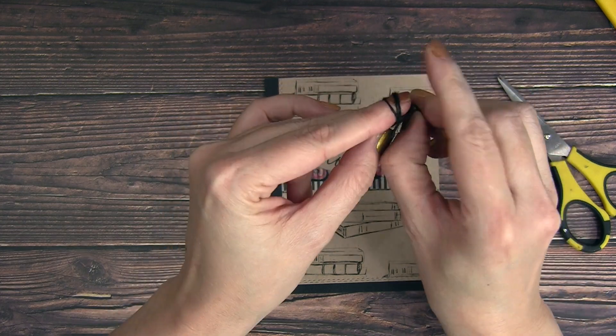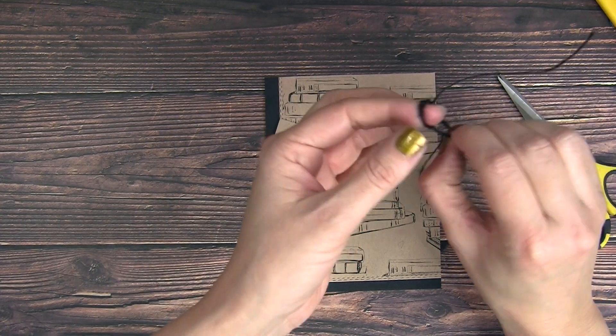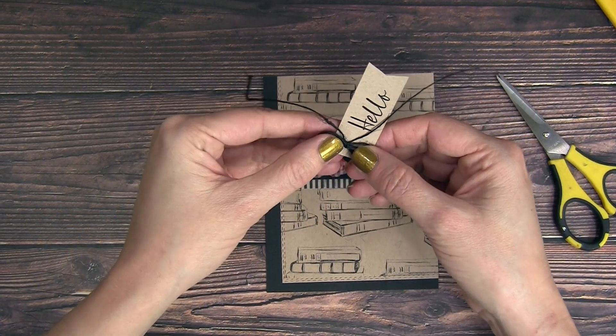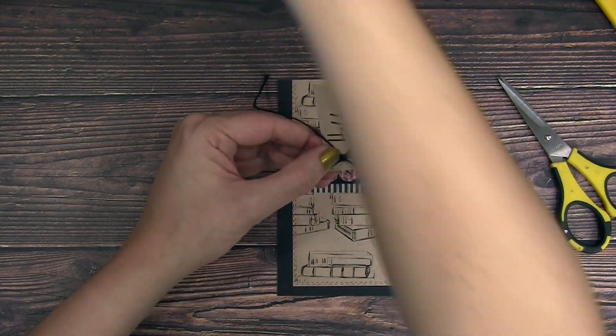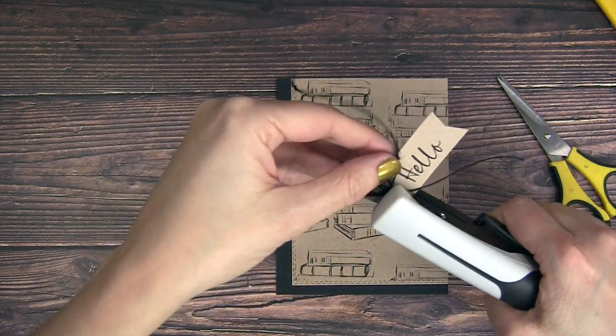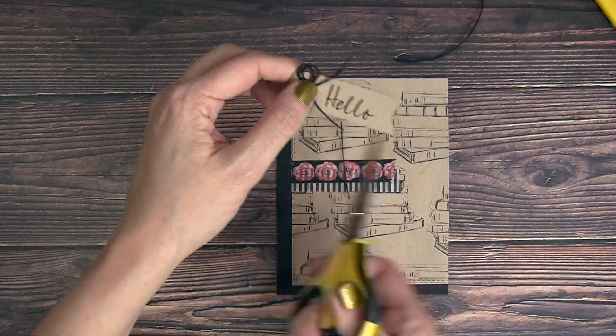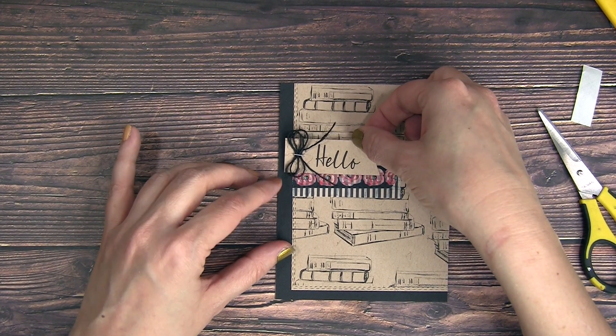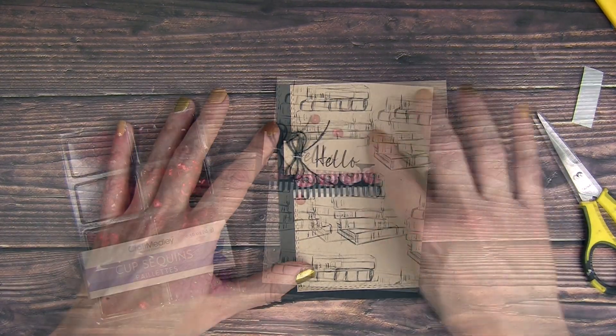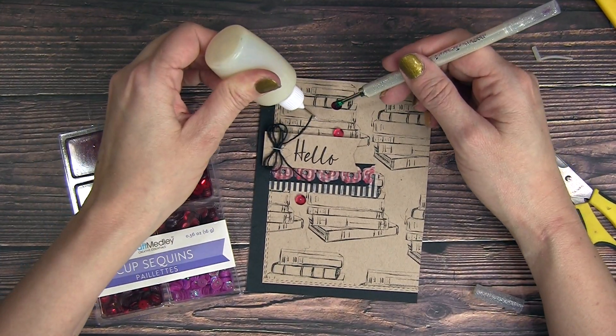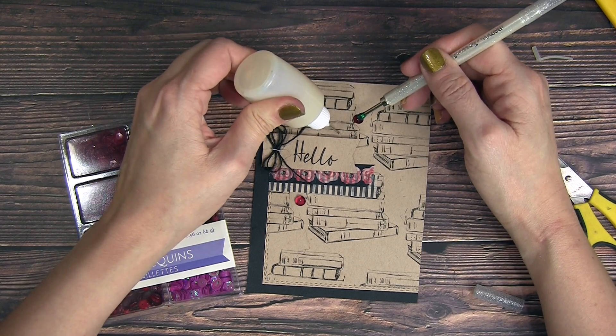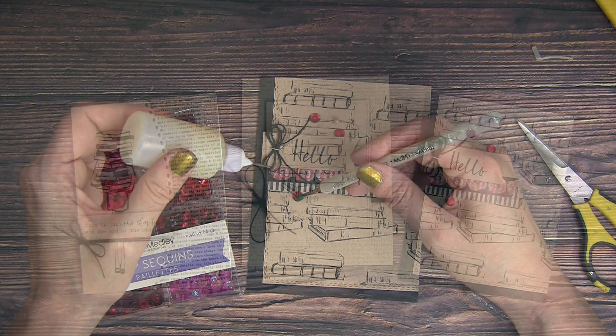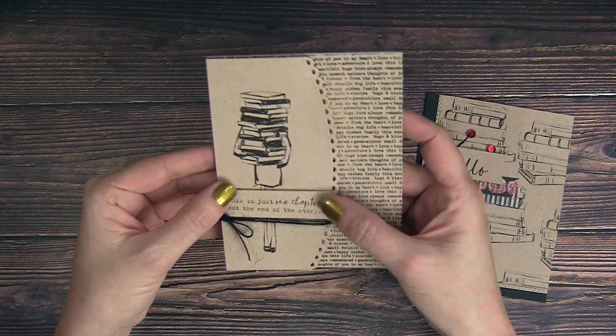And then pulling out my twine again, just gonna create a double bow I guess you would call it. Just wrapped it around my fingers a couple of times and tied that off. If you're interested in how I tie my bows, I'll put a link to that video in the description and probably up if I can link it into this video, up in the top corner. Super simple. I just added that to my sentiment and then tacked it down with a tiny little staple. And then I'm popping that up on my card front with some foam adhesive.